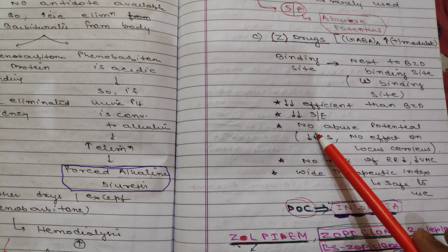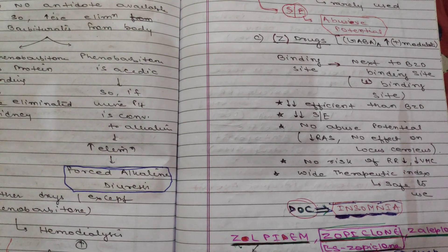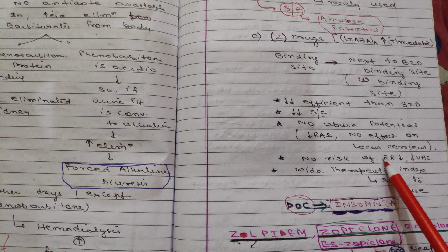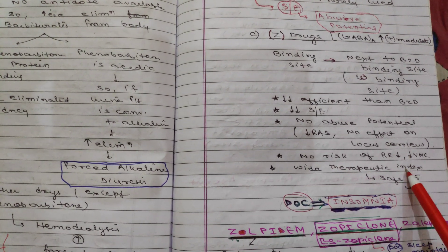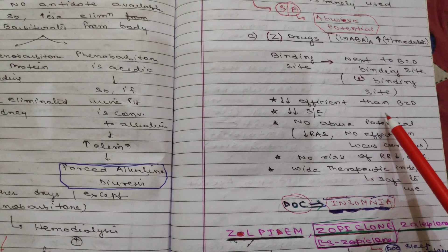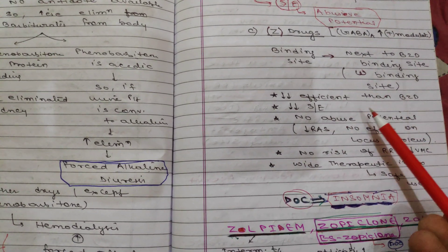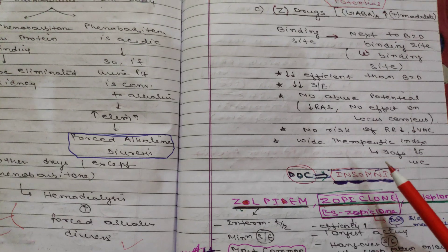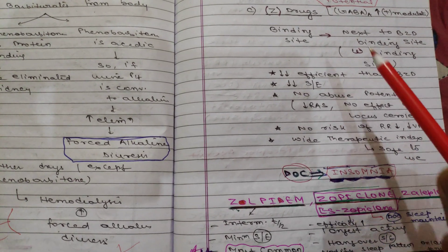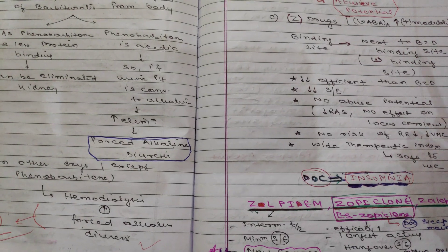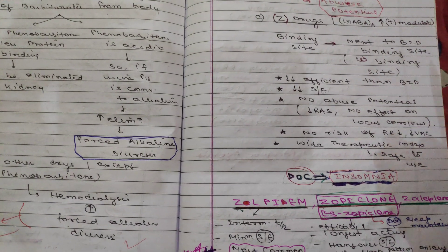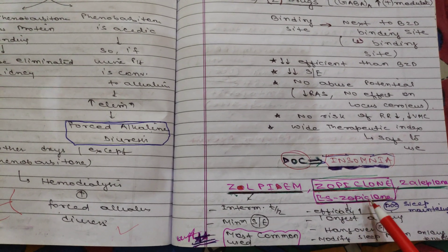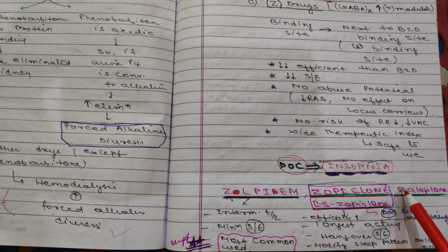Z-drugs suppress RAS but have no effect on the locus coeruleus. They have no risk of respiratory depression or vasomotor center suppression, and they have a wide therapeutic index, making them safe to use. Due to these reasons, Z-drugs are the drug of choice for insomnia. Drugs that can be given for insomnia include benzodiazepines, barbiturates, and Z-drugs.